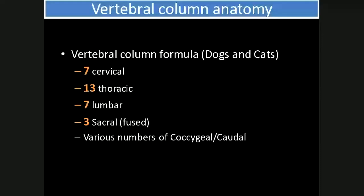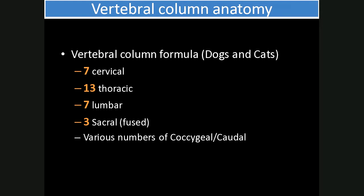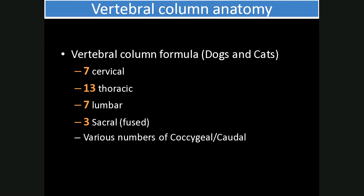The next section covers vertebral anatomy. The vertebral column for dogs and cats consists of seven cervical, 13 thoracic, seven lumbar, and three sacral vertebrae. The sacral segments are fused and there are various numbers of coccygeal or caudal vertebrae. Anatomically, the normal spinal cord ends at mid-L6, so the spinal cord segments don't correspond directly to the vertebrae. For example, the L6 spinal cord segment is located at the caudal aspect of the L4 vertebra. There are eight cervical spinal nerves but only seven vertebrae.